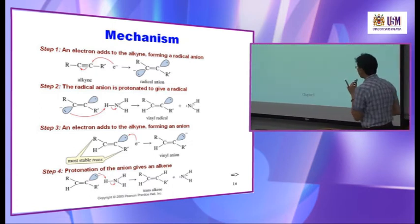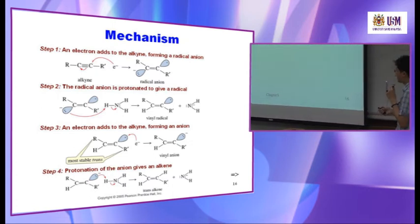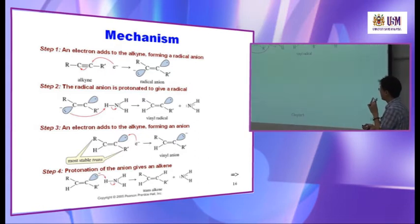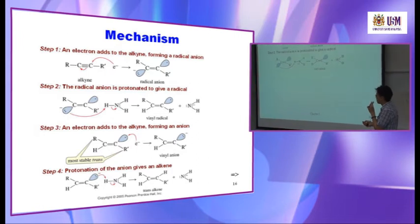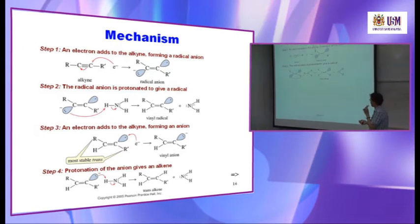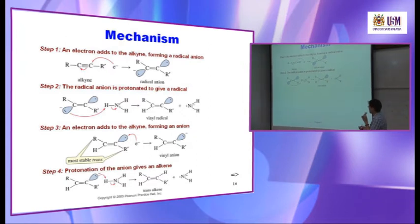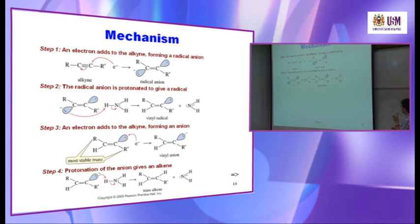Step two: because the solution is ammonia, the anion — its lone pair of electrons — attacks the hydrogen of ammonia with a full double-headed arrow, while the N–H bond breaks, yielding an amide anion (NH2⁻) and a vinyl radical. A hydrogen is now added to the carbon, but the radical remains on the other carbon.